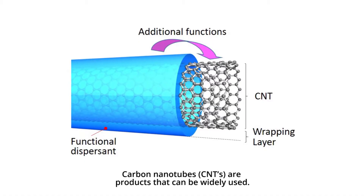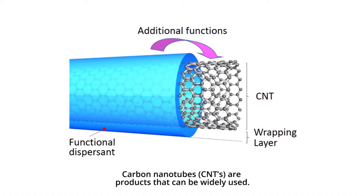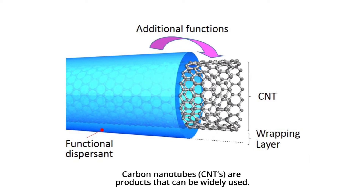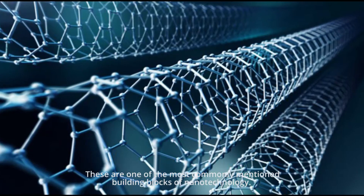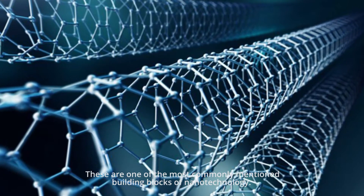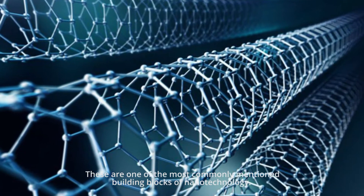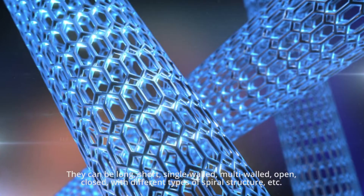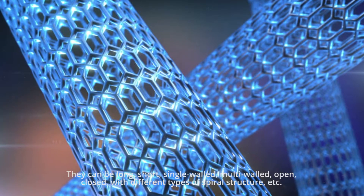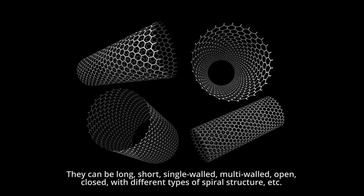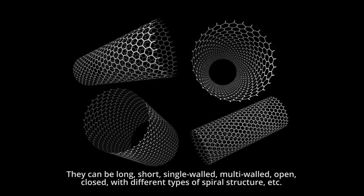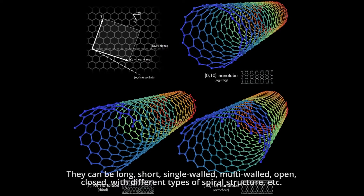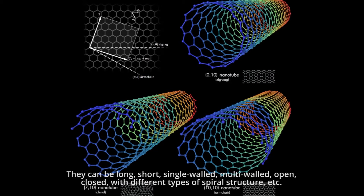Carbon nanotubes are products that can be widely used. These are one of the most commonly mentioned building blocks of nanotechnology. They can be long, short, single-walled, multi-walled, open, closed, with different types of spiral structure, etc.